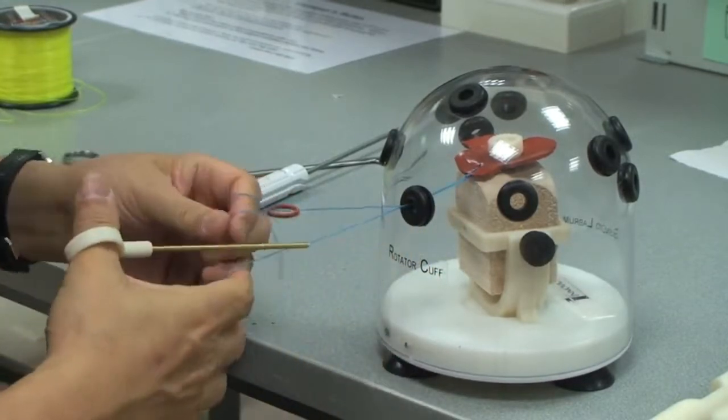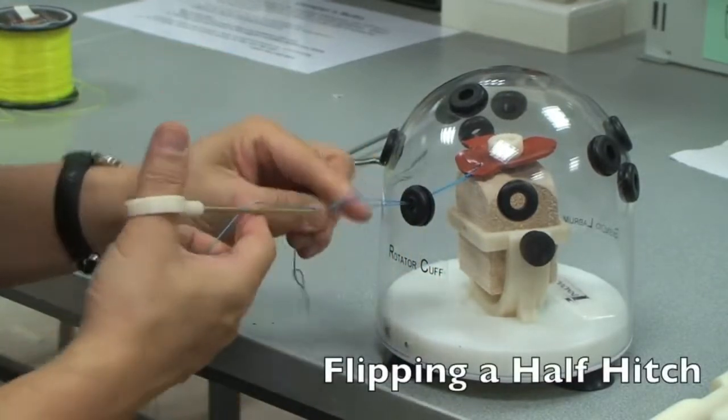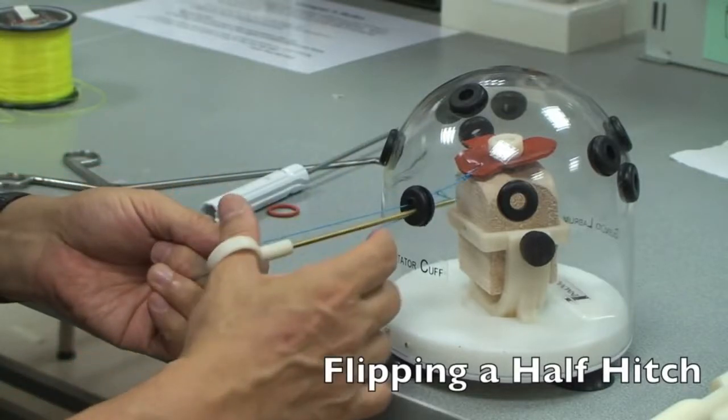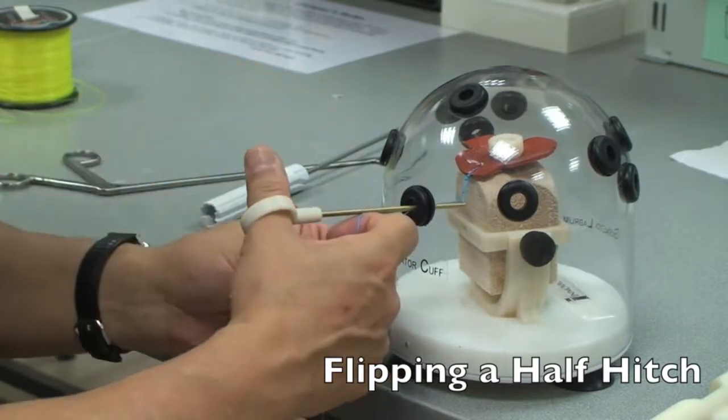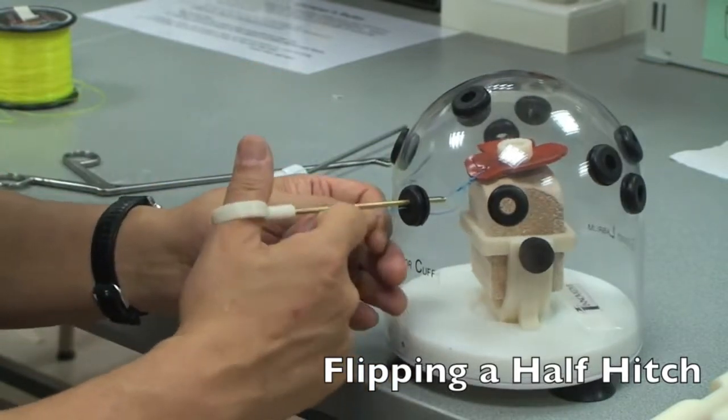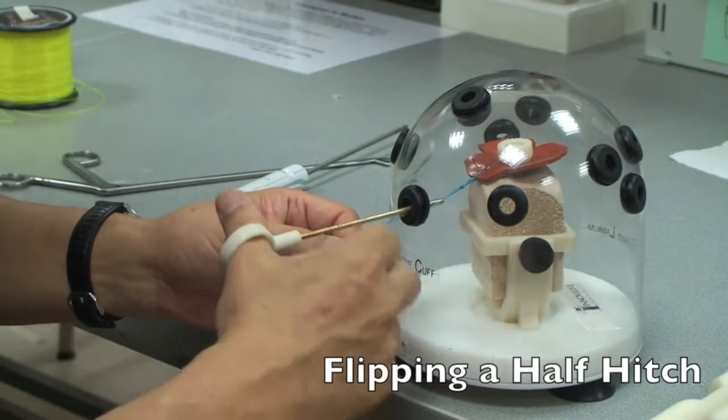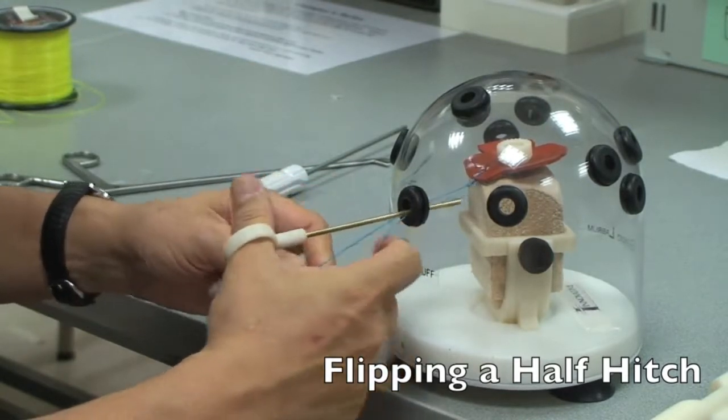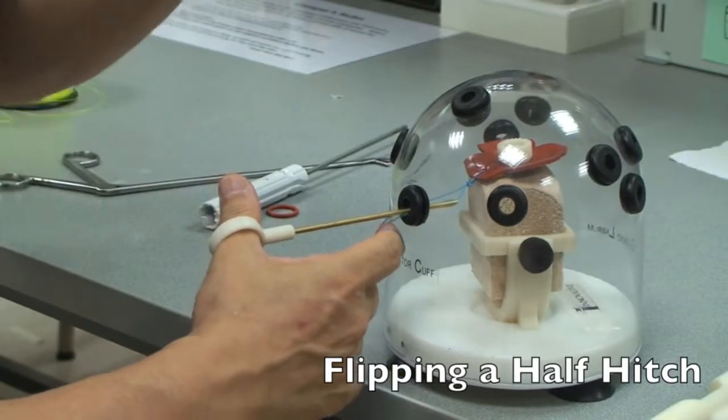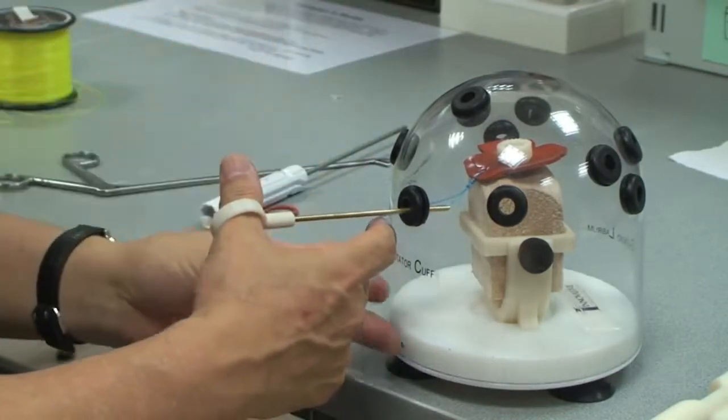Now, this is a little refinement. I put a loop here. So once I get into the joint, instead of pushing it, I can actually pull this post backward and that will flip the knot. And then I would advance that. So that would be the half hitch flip on the opposite side.